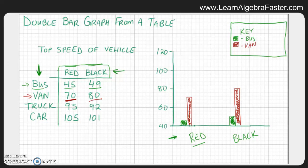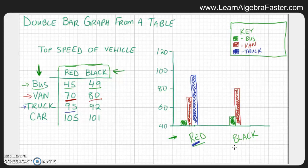Now we're going to go to trucks, but that's a different category. So we need a different color. So let's use a blue color for trucks. So we want a truck that is red, which is 95. Now let's look at black trucks, which is 92. Now we have that.